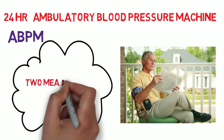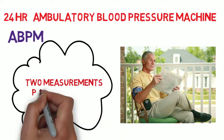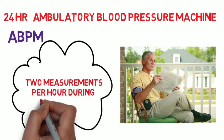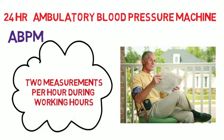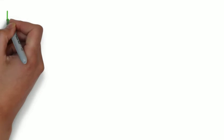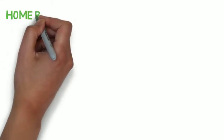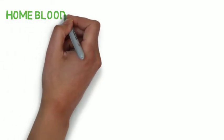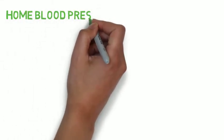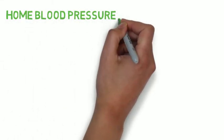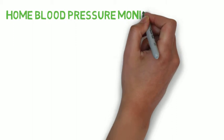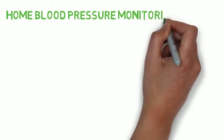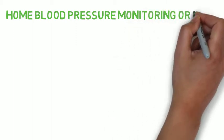Two measurements are taken per hour during the patient's usual working hours. Some patients' working situation may not allow for ABPM, therefore they undertake home blood pressure monitoring, or HBPM.